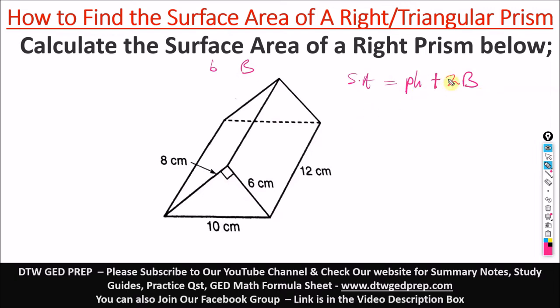So let's calculate all these values then we'll plug it in. First of all, P, the perimeter of the base. This is the base, the right prism, a triangular one, so the base is this. The perimeter, just like looking for the perimeter of the triangle, is 8 plus 6 plus 10. So let's do that: 8 plus 6 plus 10, and that would give us 24. So we have 24 centimeters as the perimeter of the base.